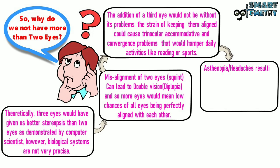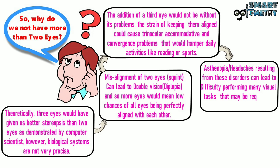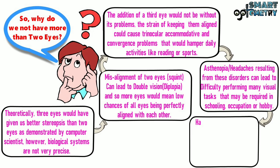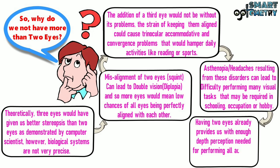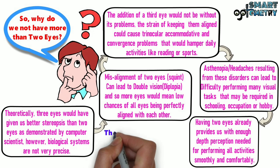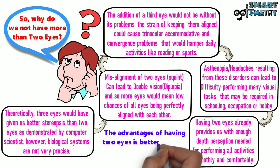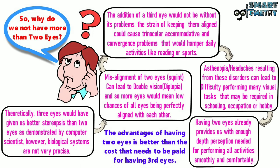Asthenopia — headaches resulting from these disorders — can lead to difficulty performing many visual tasks required in schooling, occupation, or hobby. Having two eyes already provides us with enough depth perception needed for performing all activities smoothly and comfortably. The advantages of having two eyes outweigh the cost that would need to be paid for having three eyes.